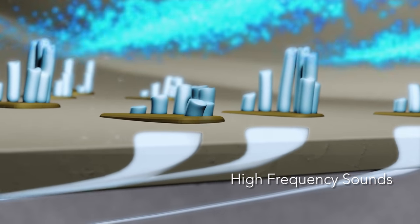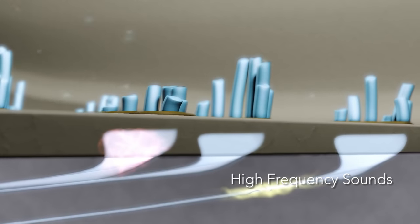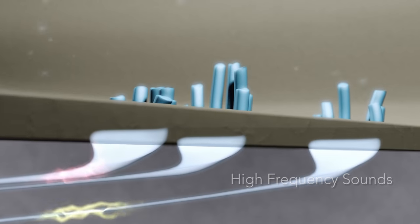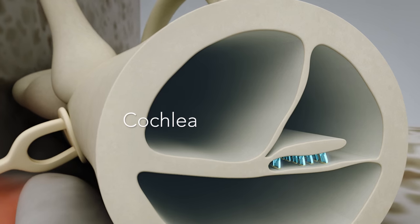Typically, it's the high frequencies that are affected first, as the respective hair cells are located at the entry of the cochlea, where every sound wave passes by.